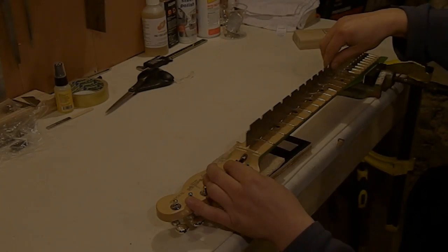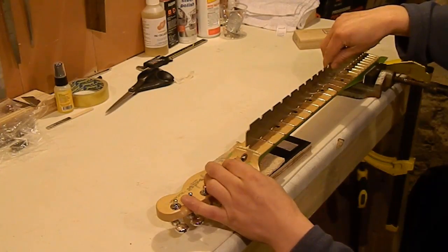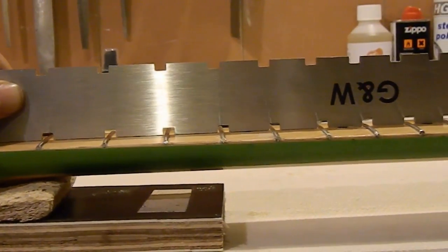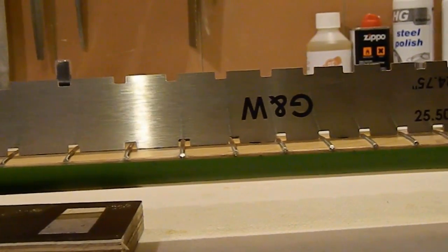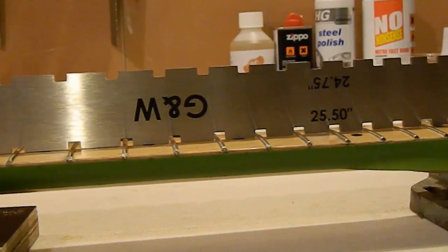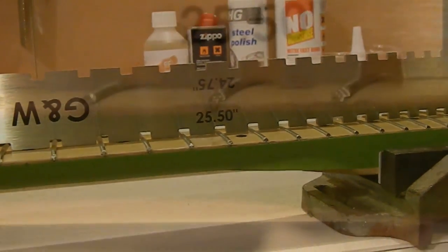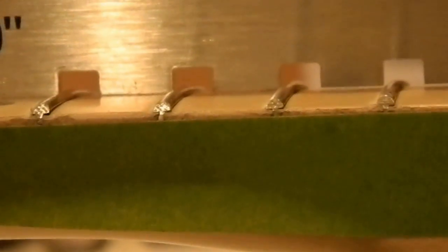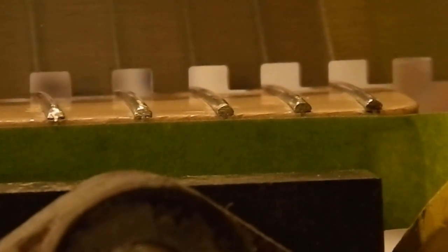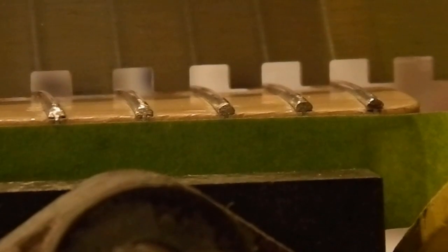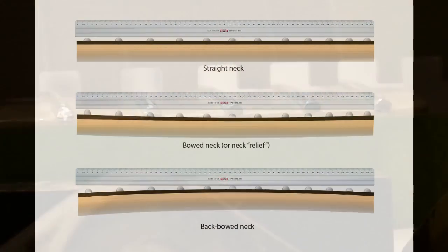Here's the neck with a notched straight edge on it, and everything is pretty much okay up until about the 12th fret, and then the neck really starts to fall away. By the time we get up to the end, there's a huge gap under there. So this neck has an enormous back bow on it.